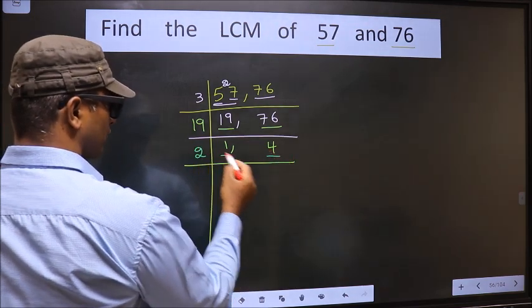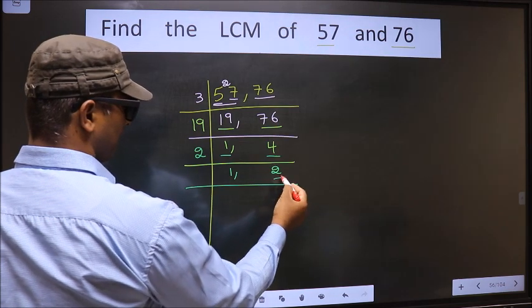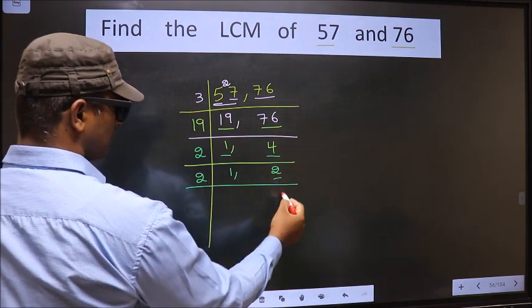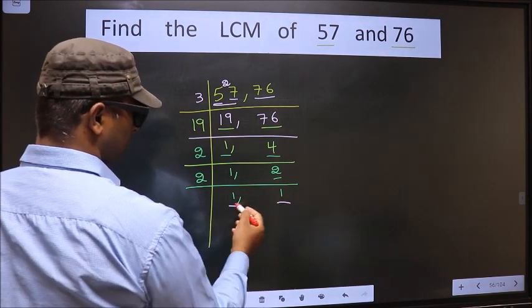4 is 2 twos, 2 is 4. Now we have 2 here. 2 is a prime number. So 2 once 2. We got 1 in both the places.